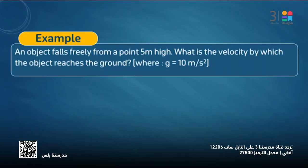Another example: An object falls freely, so the initial velocity equals zero. We know it. From a point five meters high - this is H.